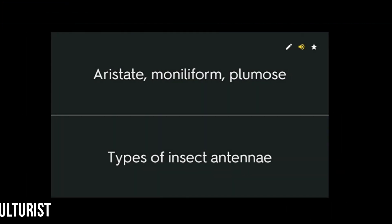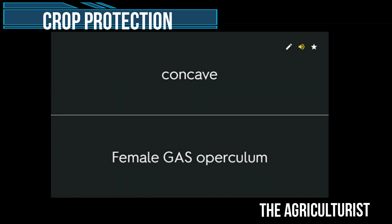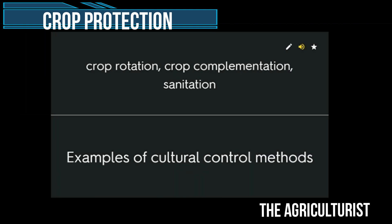Aristate, moniliform, plumose — types of insect antennae. Concave female gas operculum.